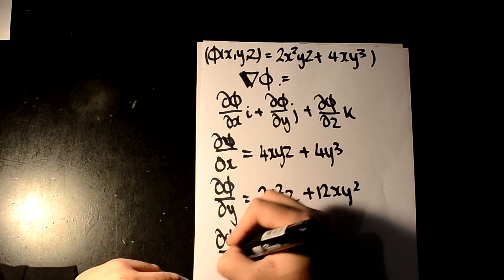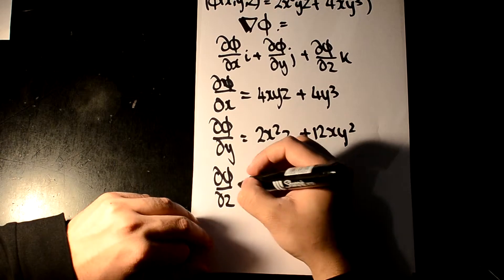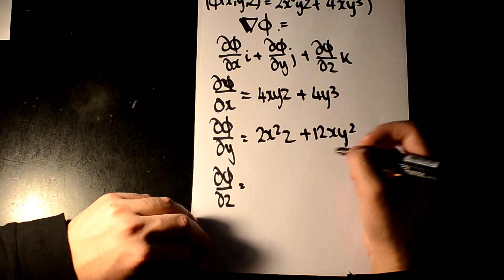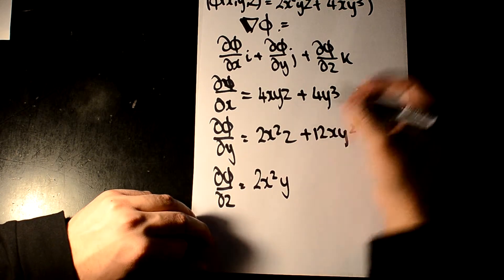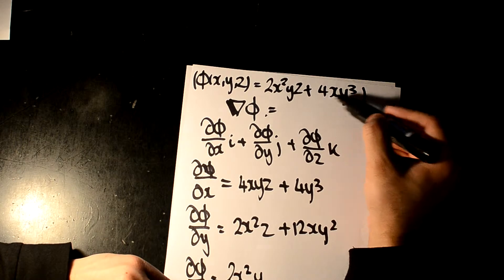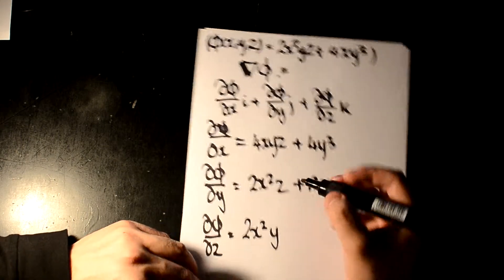And then for d phi dz, we will have 2x squared y. And as you can see, there are no z terms in here, so it's just going to be 0.